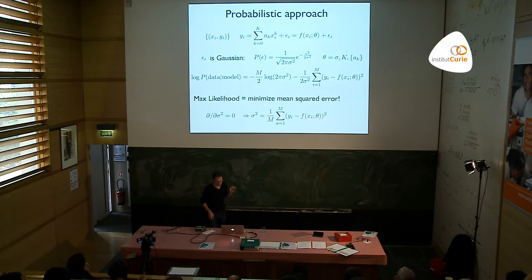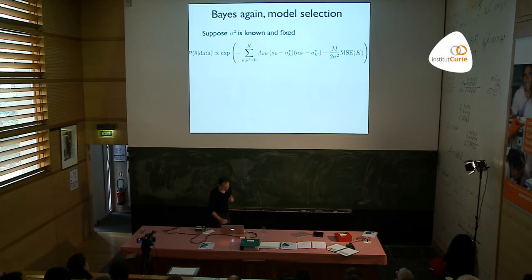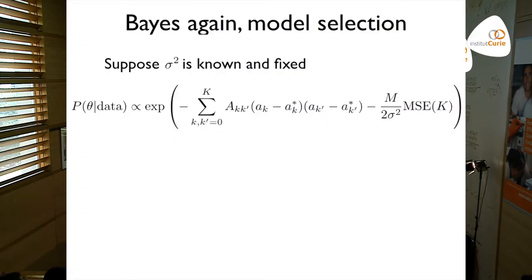All of this was the maximum likelihood approach — you take the parameters that best explain your data and use that. But let's think in Bayesian terms again. In that picture what you have is not just a single value but instead a spectrum of values with each assigned a probability. We can write the probability of the parameters theta — here the coefficients of the polynomial.